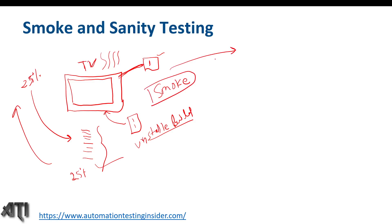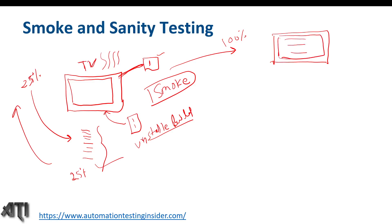Now for the sanity testing example — using the same TV scenario — let's say we have implemented 100 percent of features and the TV is rolled out into the market. Some users have already bought it, and one user reports that the screen is not working as expected when they switch on the TV. Since it is in the warranty period, it comes to customer service and they will do the bug fix. Before doing complete regression testing, we will quickly check whether that bug fix is working fine or not.